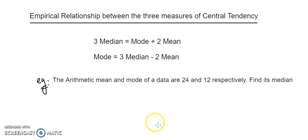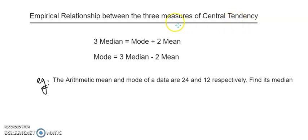Hello everyone. In continuation with the median and various questions, we have come to the last part wherein we are actually having an empirical relationship between the three measures of central tendencies. That means we are having a relationship between the median, mode, and mean.